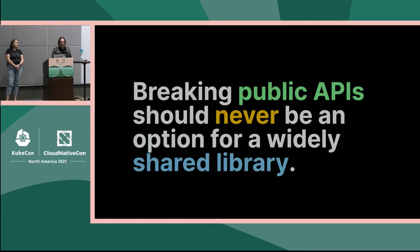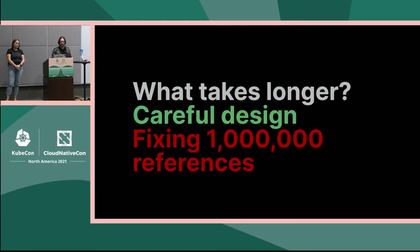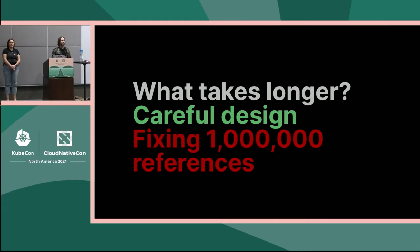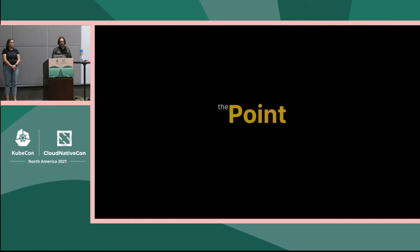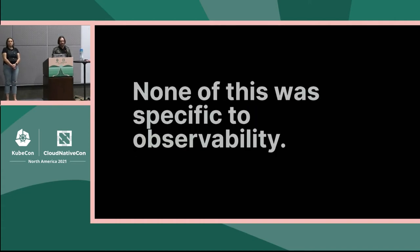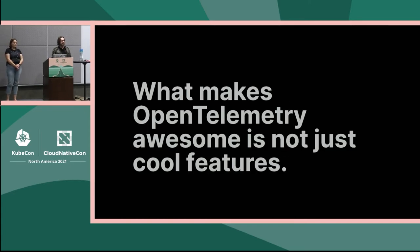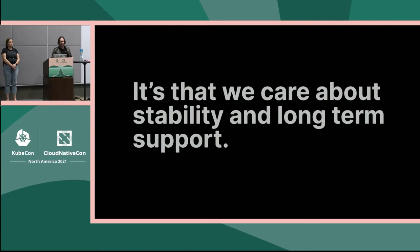Breaking APIs should never happen with any widely shared library. What takes longer — carefully designing the API and ensuring we don't create backwards compatibility issues, or fixing millions of call sites because we broke something? The point is, none of this was specific to observability. Any widely shared open source library should be thinking about these design concerns. At OpenTelemetry, we care about stability and long-term support quite a bit.